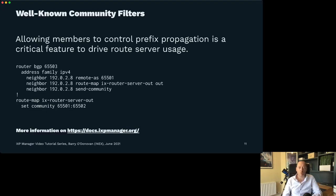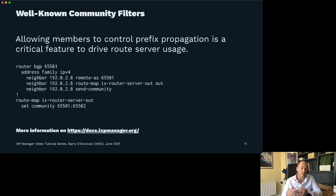We do provide a huge amount of control about prefixes and AS-path prepending using well-known community filters. By communities, I mean tagging your routes or prefixes with a BGP community. On screen here is a simple Cisco client-side configuration — we're setting a 16-bit community on any routes sent to 192.0.2.x, which in this example will be the route server. That's what we mean by communities: BGP communities tagged onto prefixes.